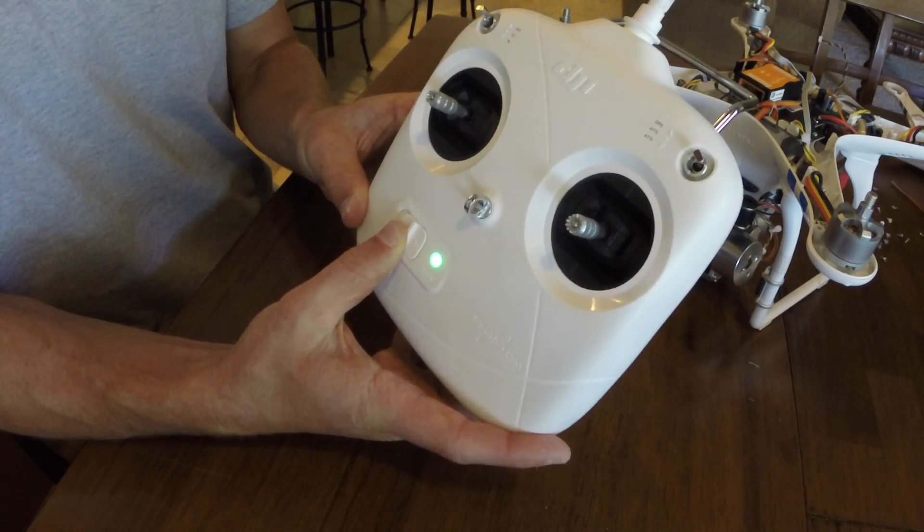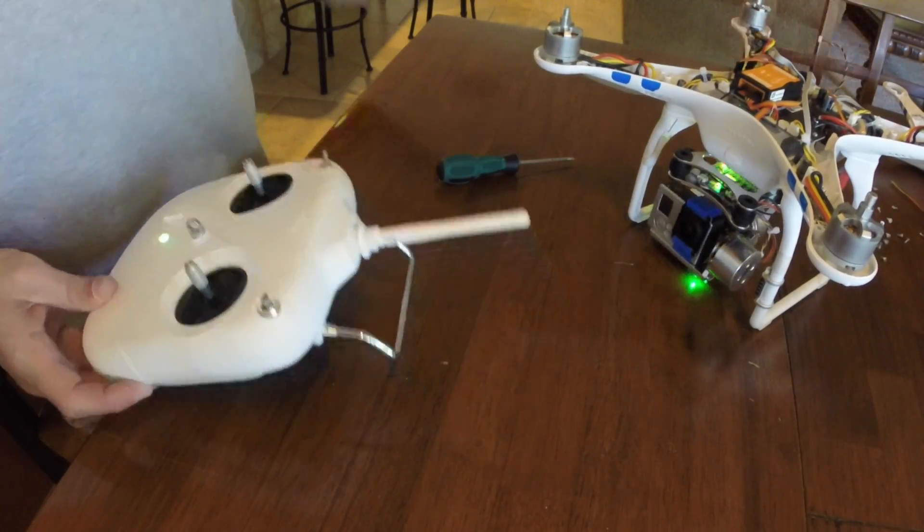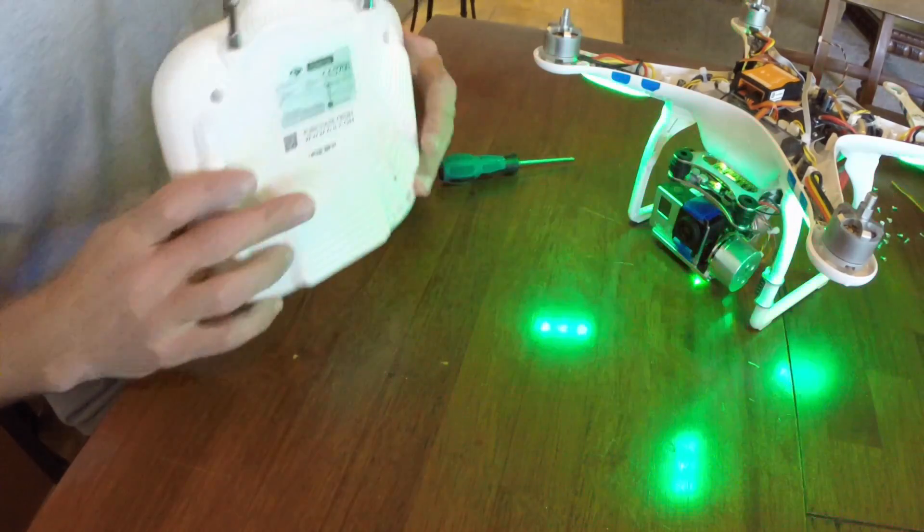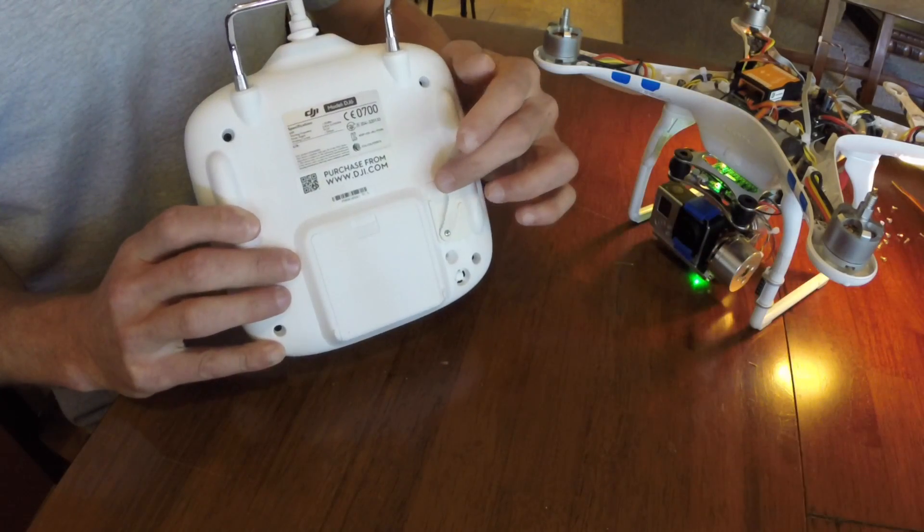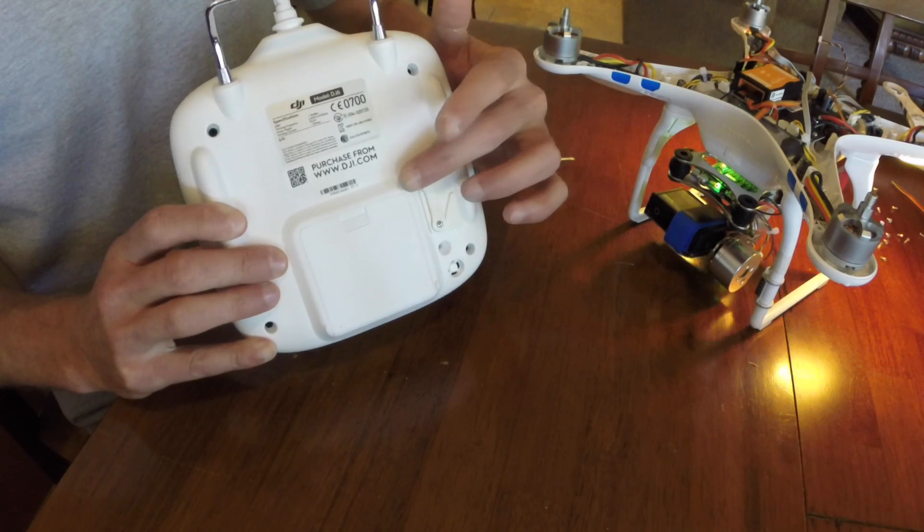Now turn your transmitter on, then turn on your Phantom. Once the camera has leveled itself out, you could then use the control pitch lever on the back of the transmitter to rotate your camera up or down.